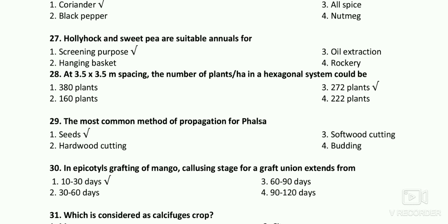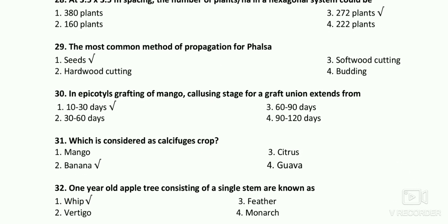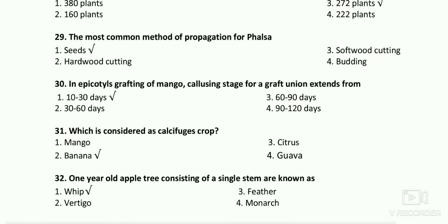In epigotile grafting of mango, the callus stage for graft union extends from 10 to 30 days. Banana is considered a calcifuge crop. One-year-old apple trees consisting of a single stem are known as whips.